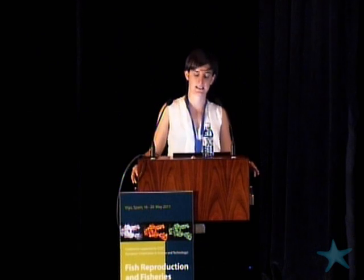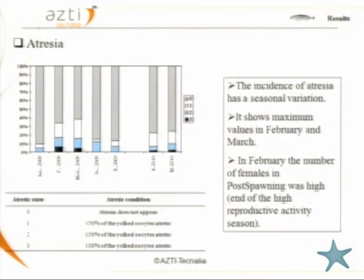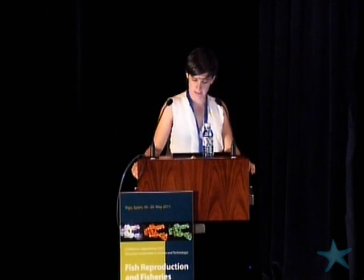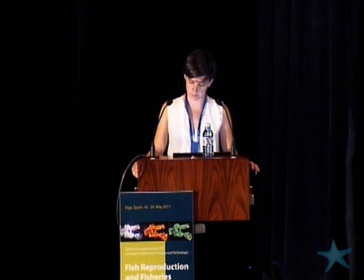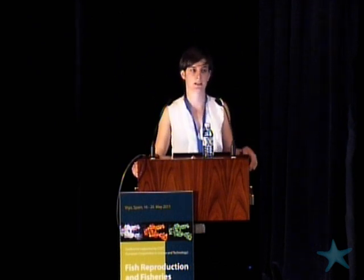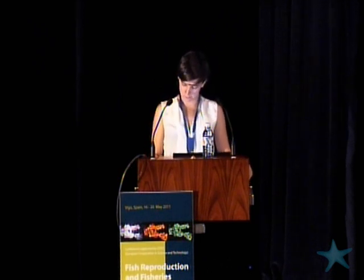We also analyzed the incidence of atresia. We classified all females into each atretic state and saw a seasonal variation. In January, values were low, then increased in February and March before going down again in June and July. February and March could be related to the end of the high reproductive activity season. In April and May, we obtained intermediate values.